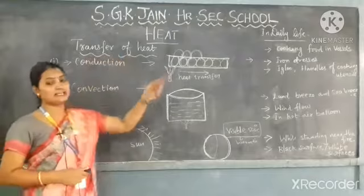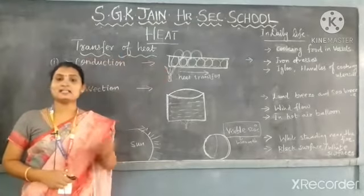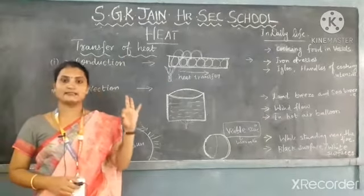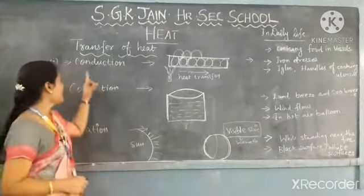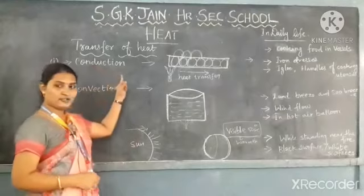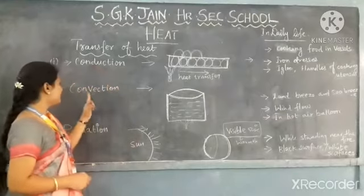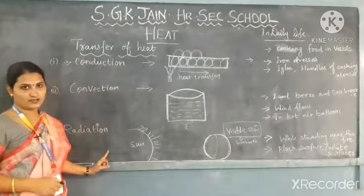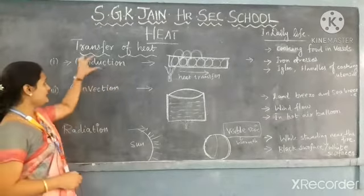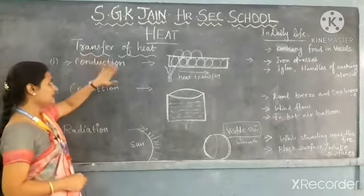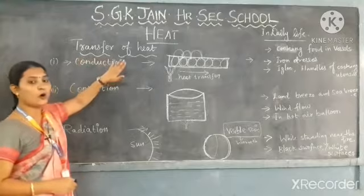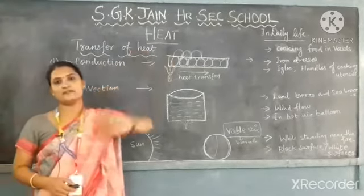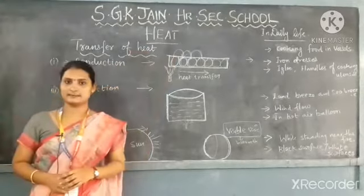Transfer of heat occurs in three different ways: conduction, convection, and radiation. In the first case, conduction always occurs in the solid state of a substance.